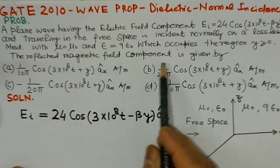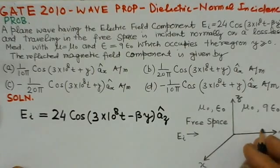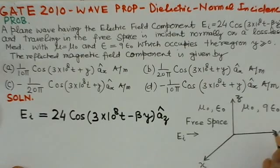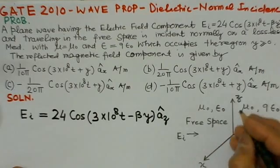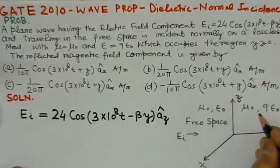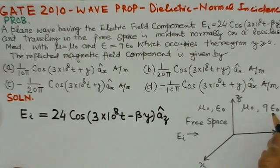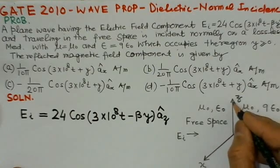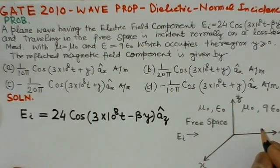The reflected magnetic field component is given by this. In this problem, there are two media. One is the free space with μ0 and ε0. The other media is a lossless dielectric having dielectric constant of 9ε0, and this is the boundary of the two regions.